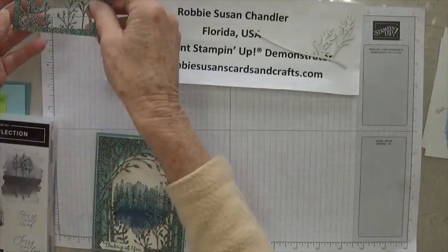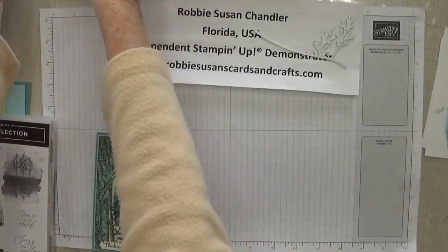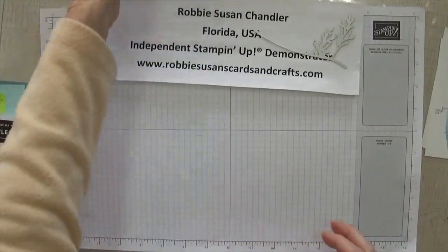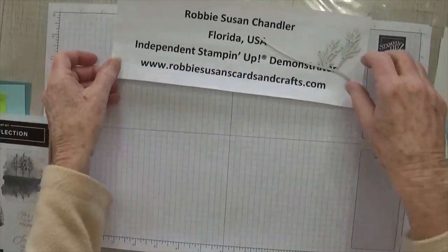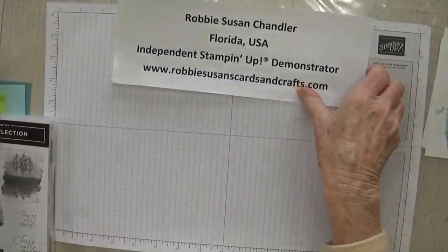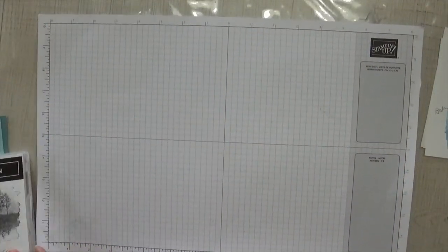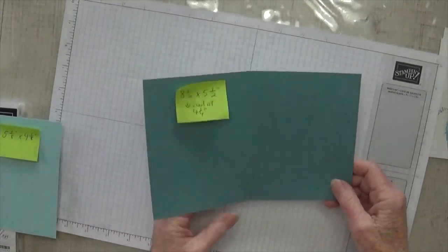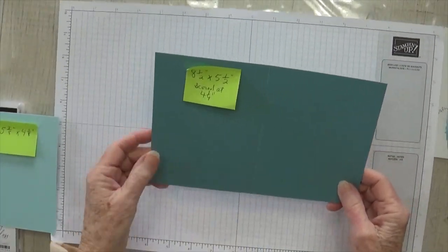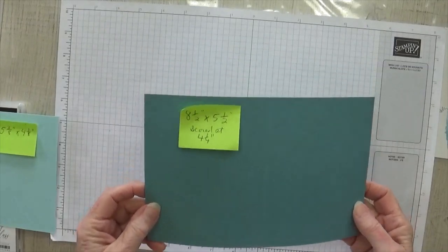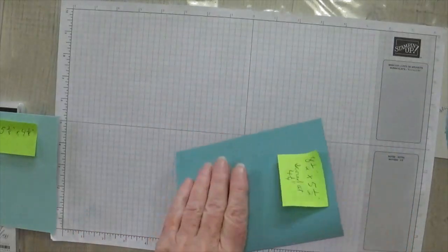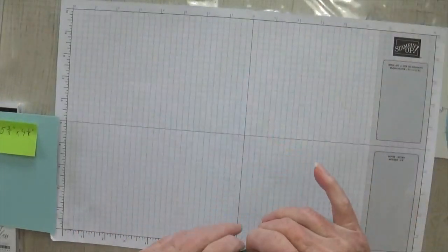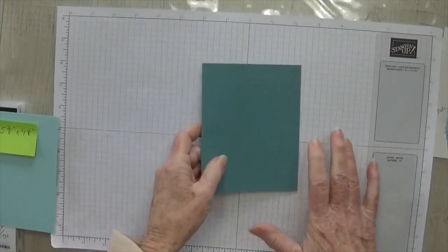Okay, now let's start with our pieces. Let's put my card right here. So let's get that out of the way. Alright, let's start with our card base. And for my card base I used Lost Lagoon. And it is eight and a half by five and a half, scored at four and a fourth. And I just folded it in half. We're actually going to put this card together today.